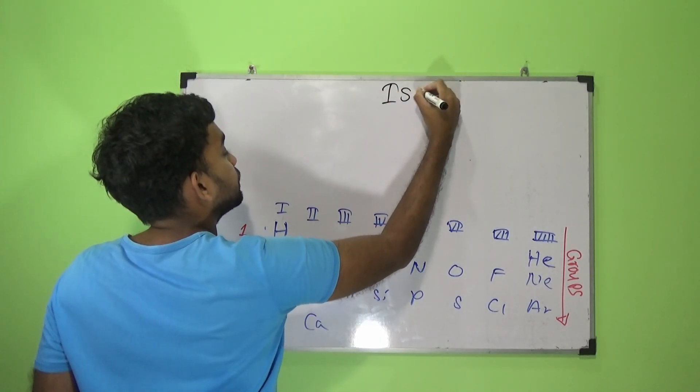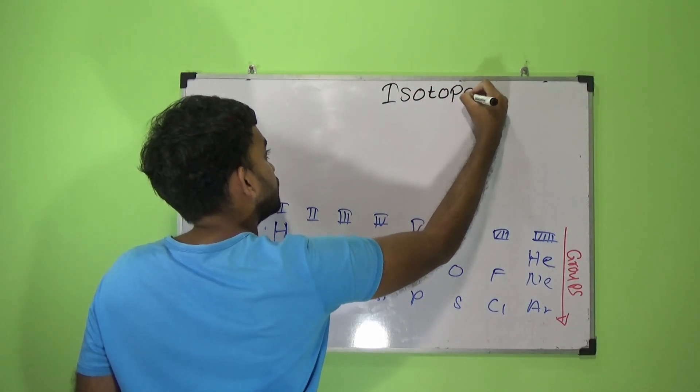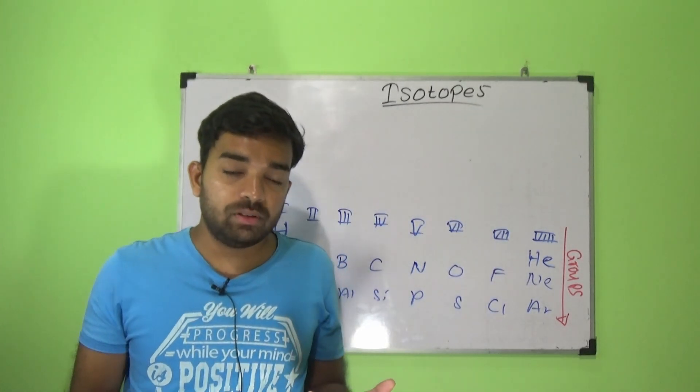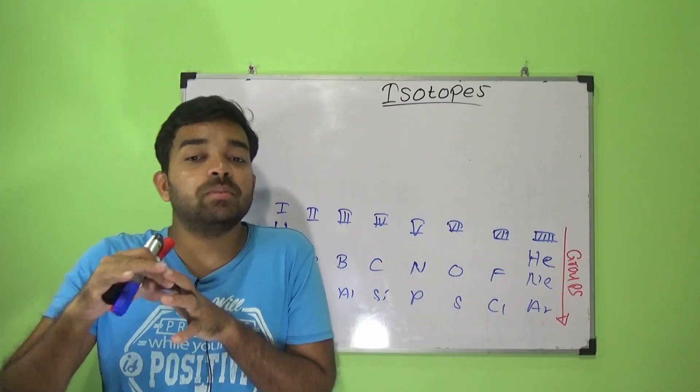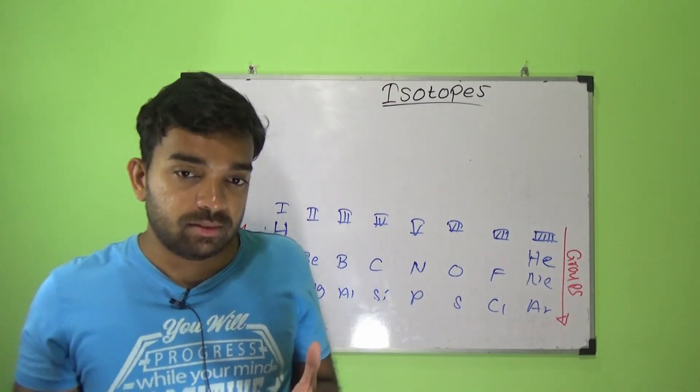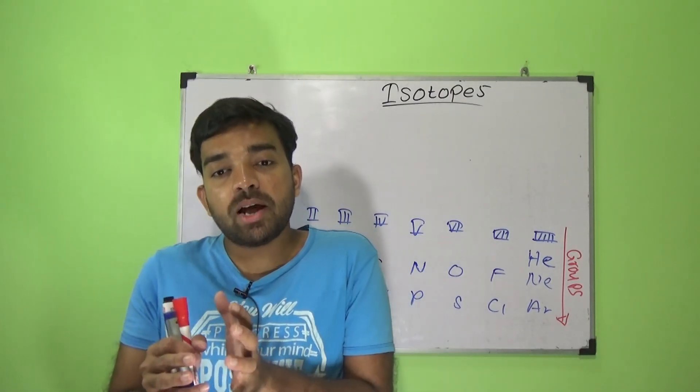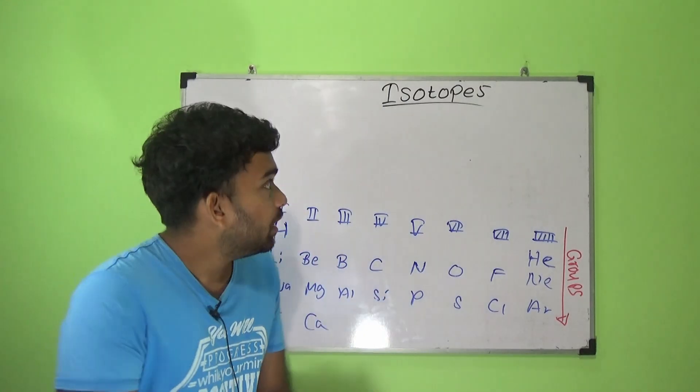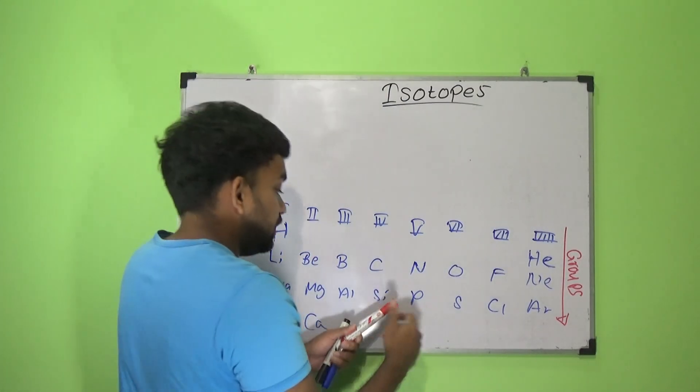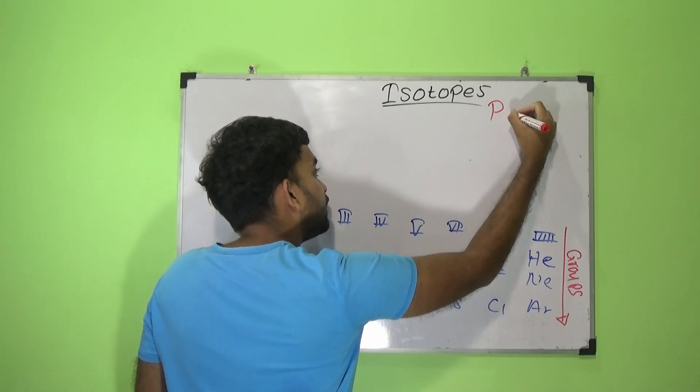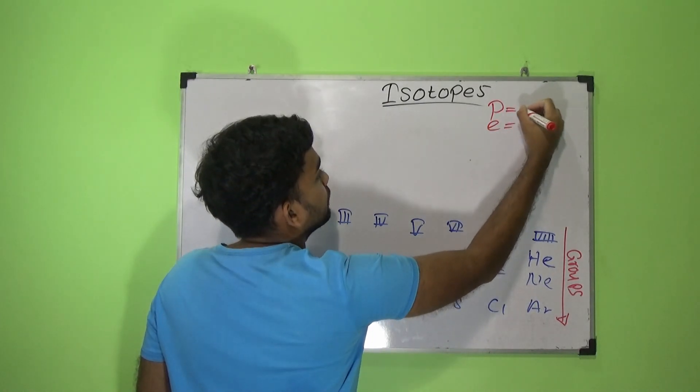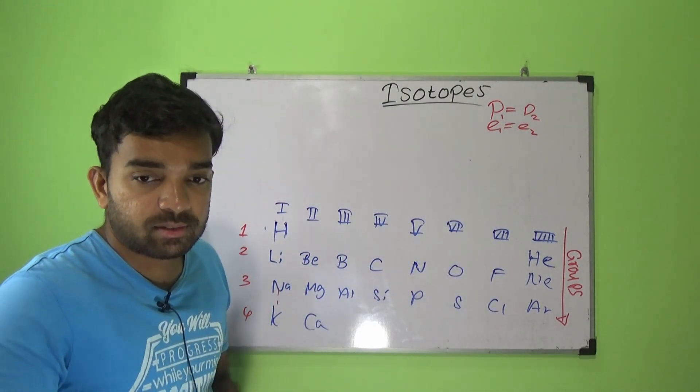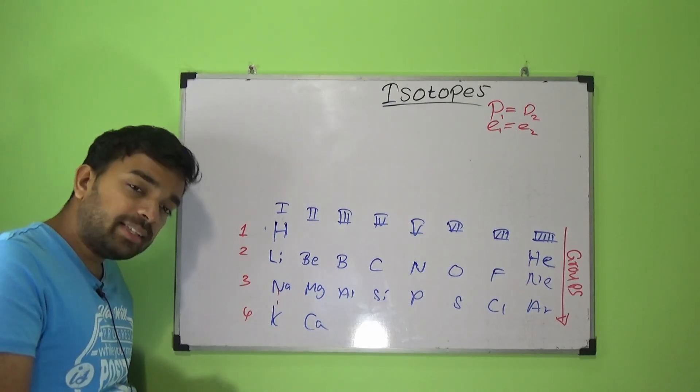Next one is isotopes. When it comes to isotopes, I said to you that I'm going to discuss about this one. The isotope is an element which has the same number of protons and electrons but different number of neutrons.